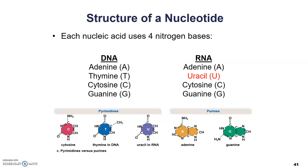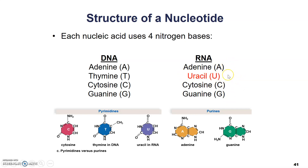Another difference is that DNA and RNA use at least one different nitrogenous base. In DNA nucleotides, there are four possible nitrogen bases: adenine (A), thymine (T), cytosine (C), and guanine (G). RNA has A, C, and G similar to DNA, but instead of thymine it has a base called uracil (U). So RNA does not have thymine, and DNA does not have uracil.